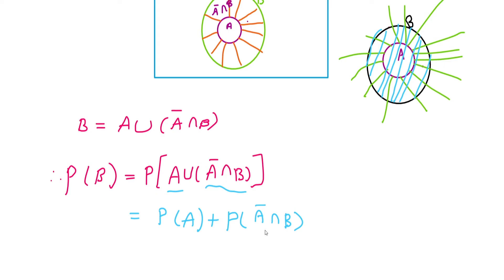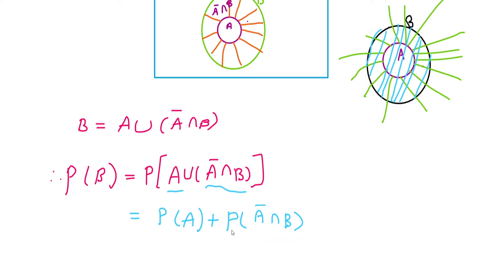Again, we can use the properties of probability: any event of this sample space has a probability value greater than or equal to 0. So P of A-bar intersection B is either 0 or greater than 0 — it cannot be negative.